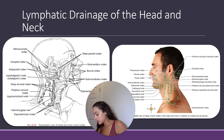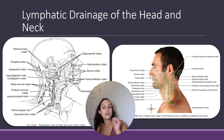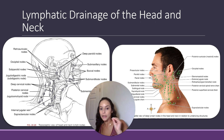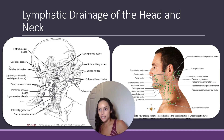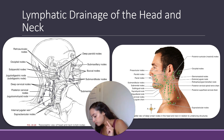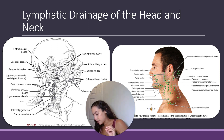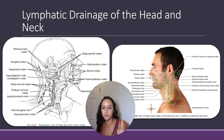Starting off with the occipital lymph nodes — usually one to three in number. Where is your occipital bone? It's in the back of your head. So occipital nodes are right here, right in the back of your head. These provide efferent flow to the superior deep cervical nodes.